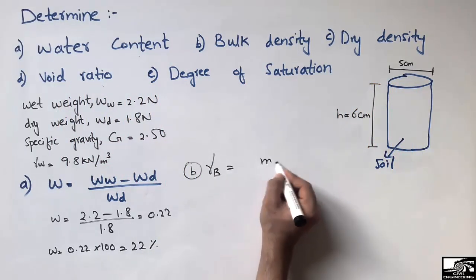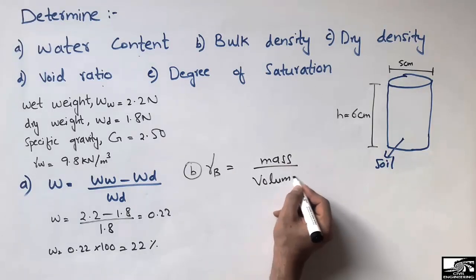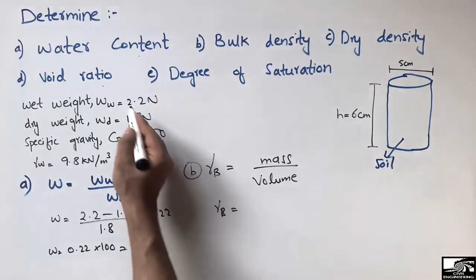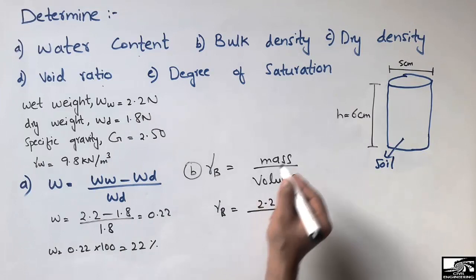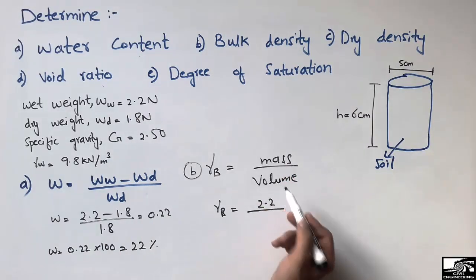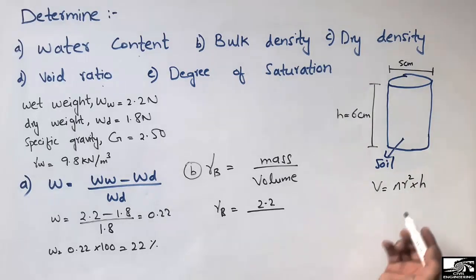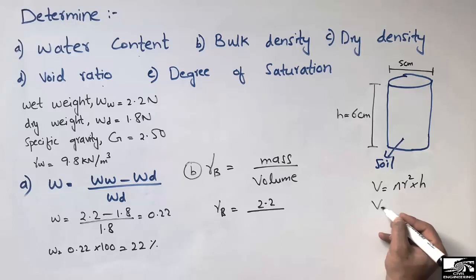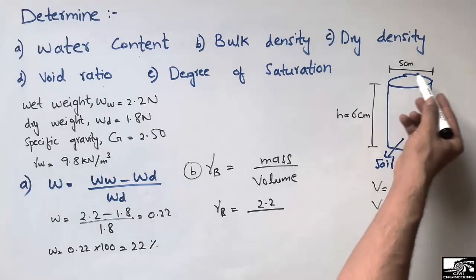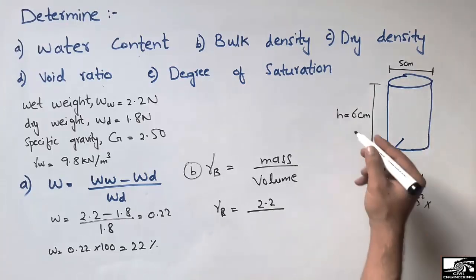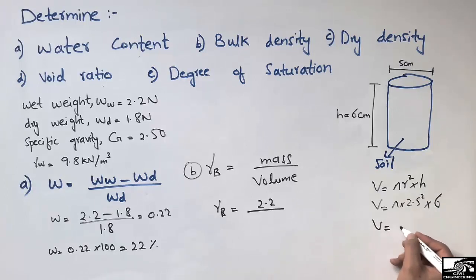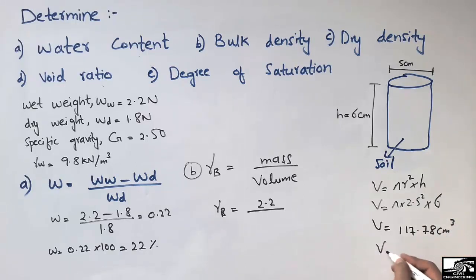Bulk density is the ratio of the total mass divided by the total volume of the sample. The total mass is the wet weight of 2.2 Newton. The volume of the sample — it is a circular cylinder, so its volume is pi r squared times height. Volume equals pi times (2.5)² times 6, which comes out to be 117.78 cubic centimeters.